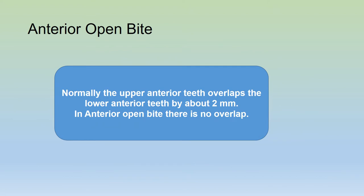Let's have a look at anterior open bite. The upper anterior teeth normally overlap the lower anterior teeth by about two millimeters. In an anterior open bite situation, there is no vertical overlap between the upper and lower anterior teeth.